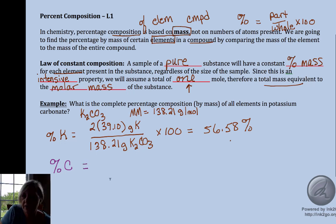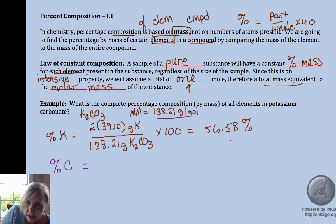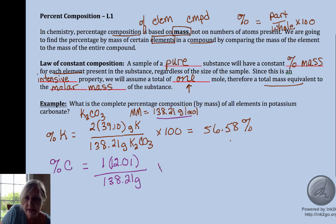Well, what percentage of this is carbon? Well, when we calculated that molar mass, there was one carbon times its molar mass of 12.01 divided by the whole times 100, and we get 8.69%. And then finally, a couple of ways we can do oxygen.